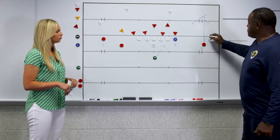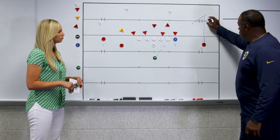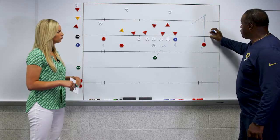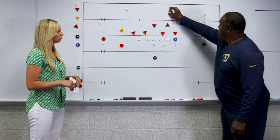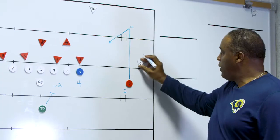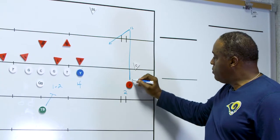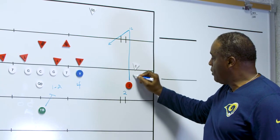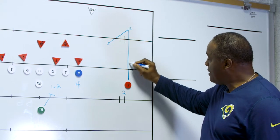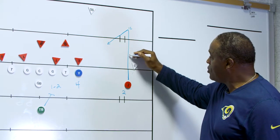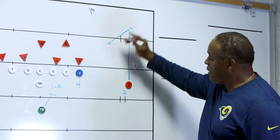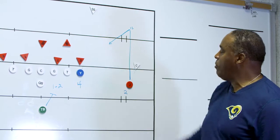If it was a roll corner giving a Cover 2 look with a half-field safety, he would alter his release a little bit, widening the corner, slipping back inside, getting back on track, pushing up 12 yards, and coming back to the quarterback.